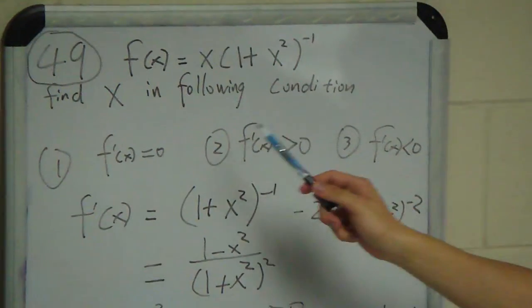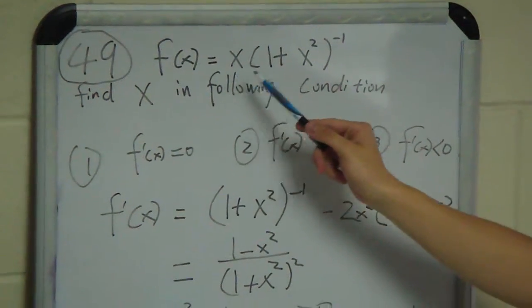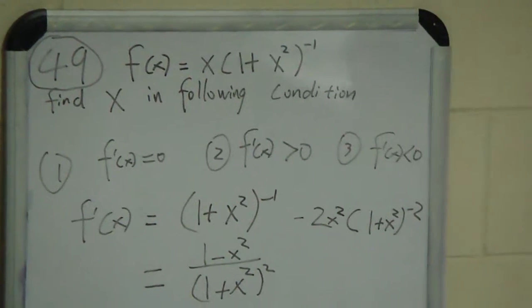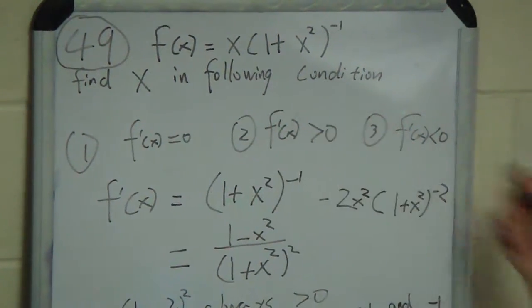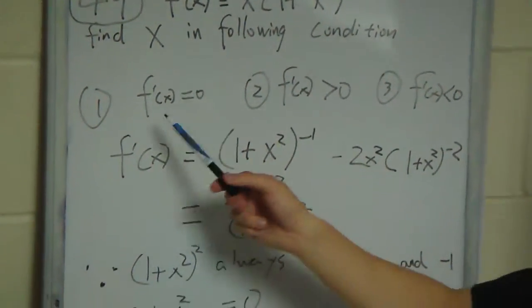The question basically gives you a function f(x) = x(1+x²)^(-1) and now we need to find x in the following condition. They give you three conditions.